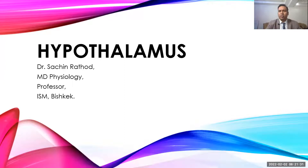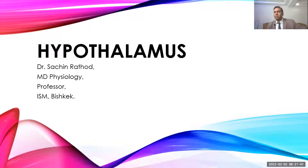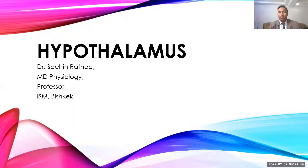Today we are going to talk about the hypothalamus. It is one of the important structures in our brain which hosts various important regulatory vital centers that regulate the functions of the heart, respiratory centers, regulation of osmosis, and temperature regulation. All those things occur in the hypothalamus, and it is one of the important structures for maintaining homeostasis.